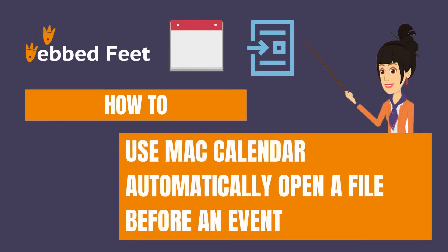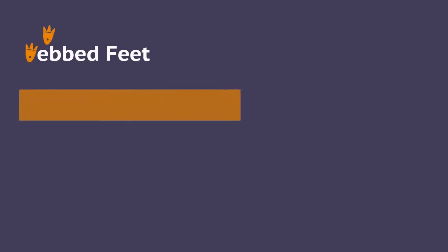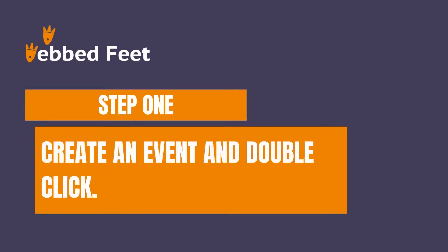How to use Mac Calendar to automatically open a file before an event. Step 1: Select or create an event and double-click.